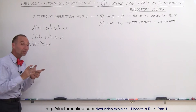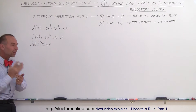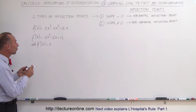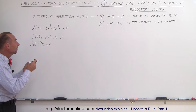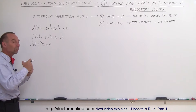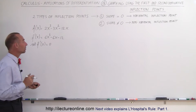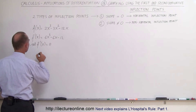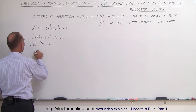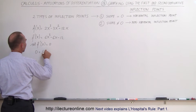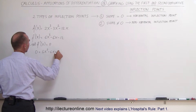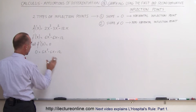We're going to set it equal to zero so we can find the max, min, and horizontal inflection points. So, zero equals 6x squared minus 6x minus 12.